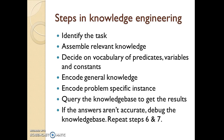There are seven steps to knowledge engineering. The first one is to identify the task, then assemble the relevant knowledge about the task, decide on vocabulary of predicates with variables and constants for the task, and encode general knowledge required for the task.